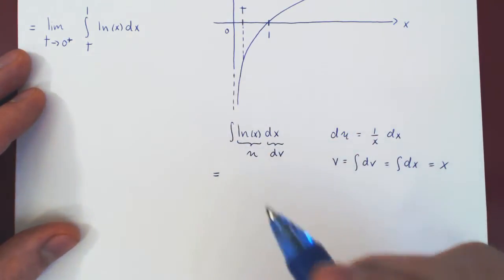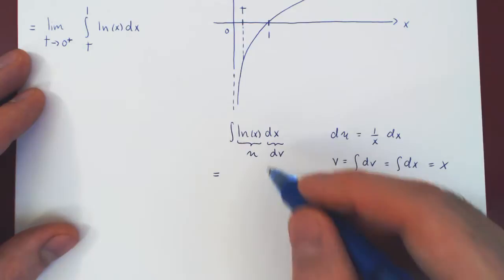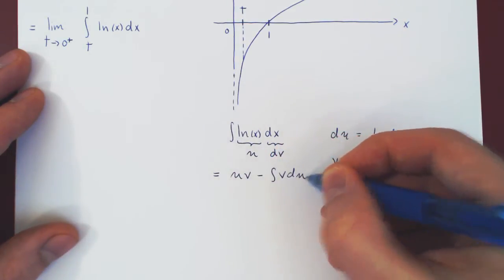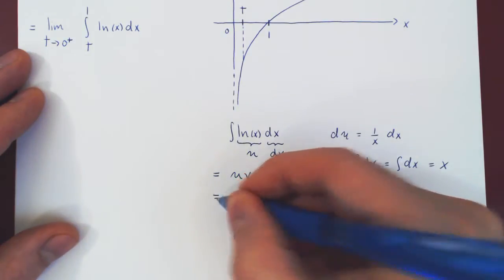Again, integration by parts states that the integral of u dv is uv, minus the integral of v du, and now it's just a matter of substitution.